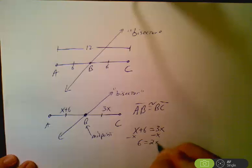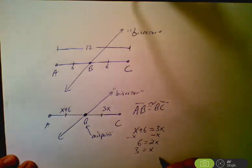So 6 is going to equal 2X. That means X equals 3, right? Divide both sides by 2. You get 3.